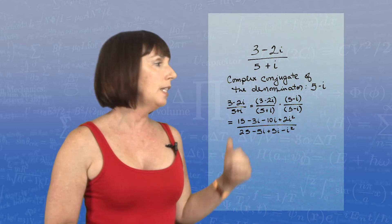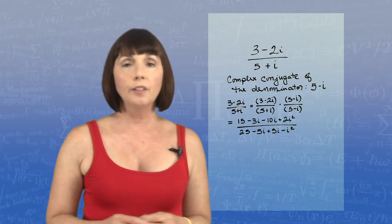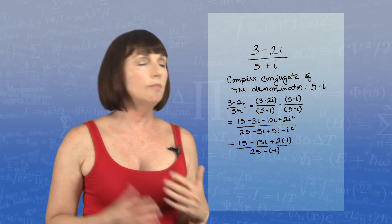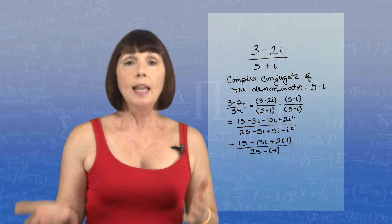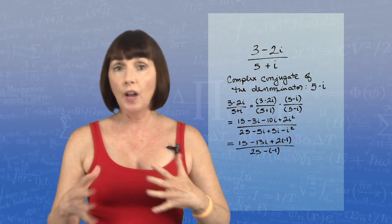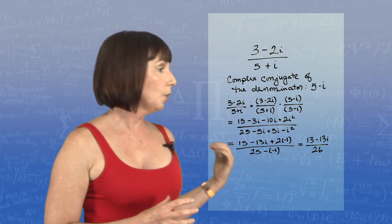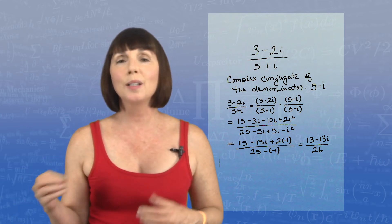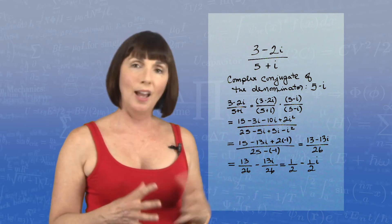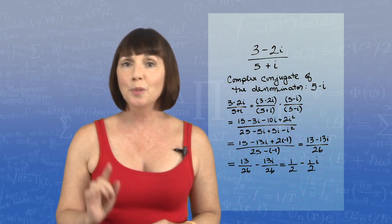Using FOIL on the top we get 15 minus 3i minus 10i plus 2i squared, and on the bottom we get 25 minus 5i plus 5i minus i squared. On top: 15 minus 13i plus 2 times negative 1. On the bottom: 25 minus negative 1, since i squared equals negative 1, and the 5i terms cancel. Simplifying, the top gives 13 minus 13i and the bottom gives 26, so we get 13 over 26 minus 13 over 26 i, or 1 half minus 1 half i.